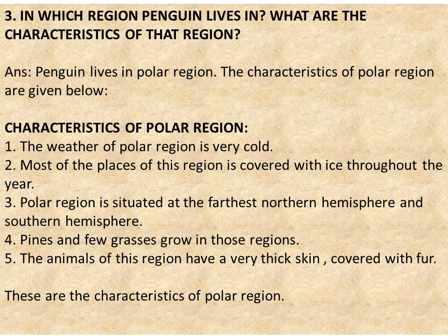Number 3: In which region does the penguin live? What are the characteristics of that region? Penguin lives in the polar region. The characteristics of the polar region are: Number 1, the weather of the polar region is very cold. Number 2, most of the places of this region are covered with ice throughout the year. Number 3, the polar region is situated at the farthest northern and southern hemispheres. Number 4, pines and few grasses grow in those regions. Number 5, the animals of this region have very thick skin covered with fur. These are the characteristics of the polar region.